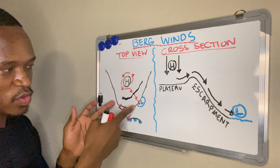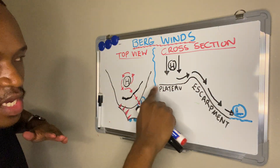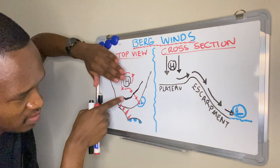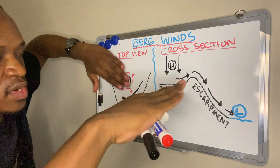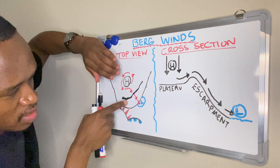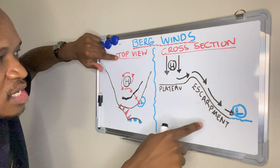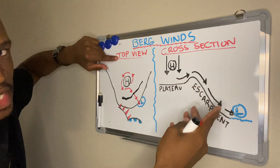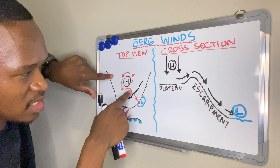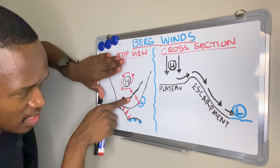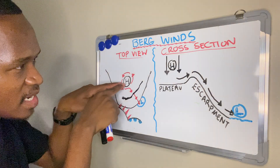This diagram shows South Africa from the top view, and this is the cross section we have cut through South Africa. The black shaded part above the cross section is the plateau — the elevated flat land. This side is the escarpment. On the interior is the Kalahari High, and this is the escarpment leading up to my coastal low.